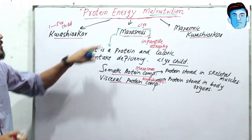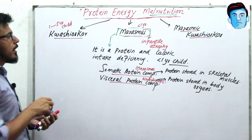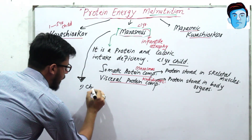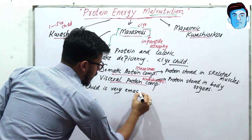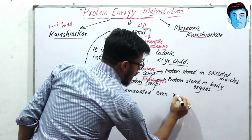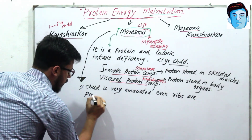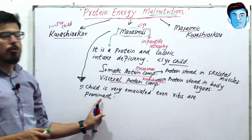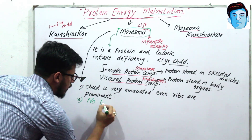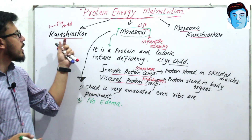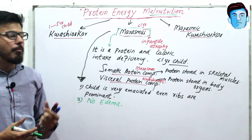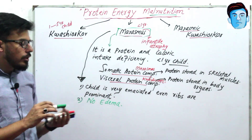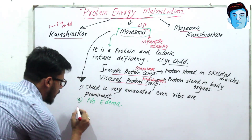Let's discuss clinical manifestations of a patient suffering from Marasmus. The child is very emaciated — very thin — and even the ribs are prominent. There is no edema in Marasmus. In Kwashiorkor, the most diagnostic feature is pitting edema, but in Marasmus there is no pronounced edema. The most diagnostic feature of Marasmus is muscle wasting.